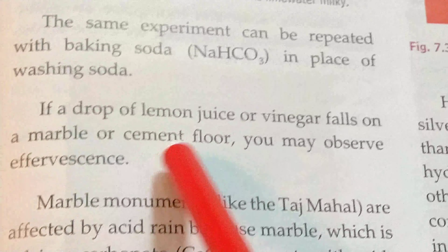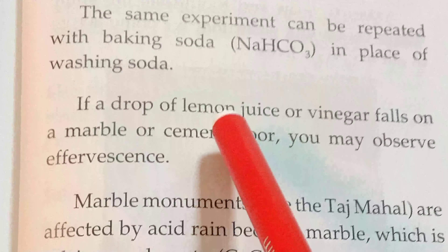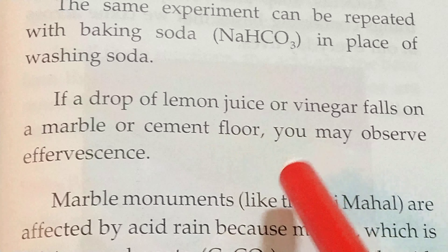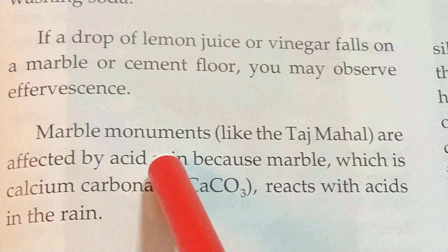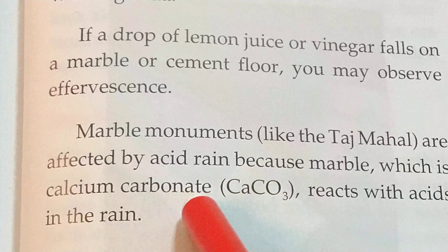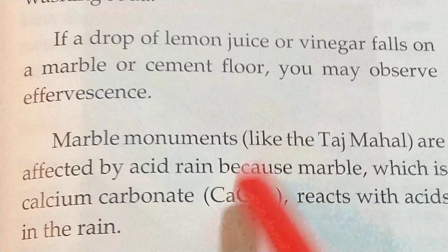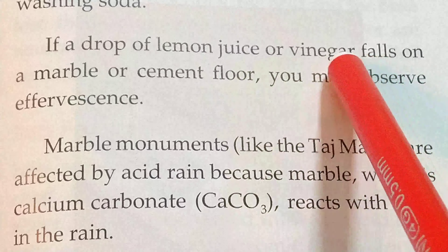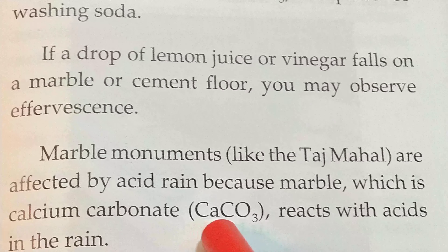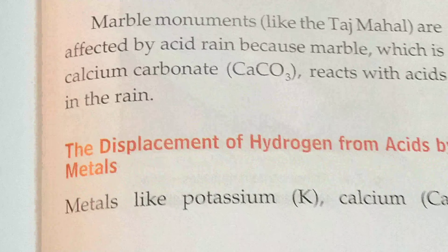If a drop of lemon juice or vinegar falls on a marble or cement floor, you may observe effervescence — bubbles forming on the surface. Marble monuments are affected by acid rain because marble is calcium carbonate. When acid — such as lemon juice or acid rain — falls on marble, the hydrogen atoms in the acid react with the calcium carbonate, which is why marble monuments are easily corroded by acid rain.